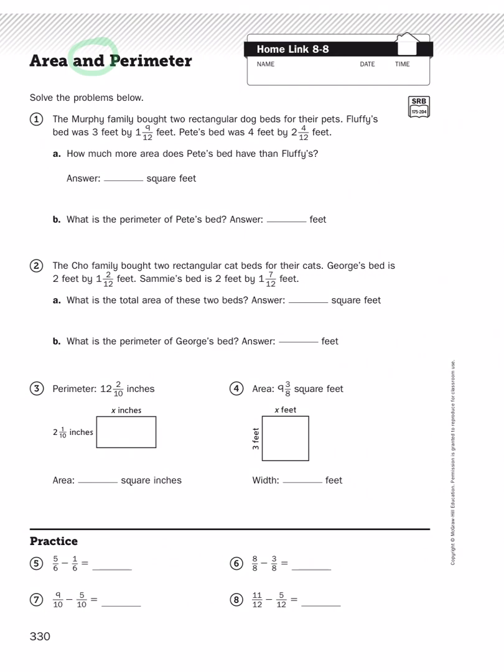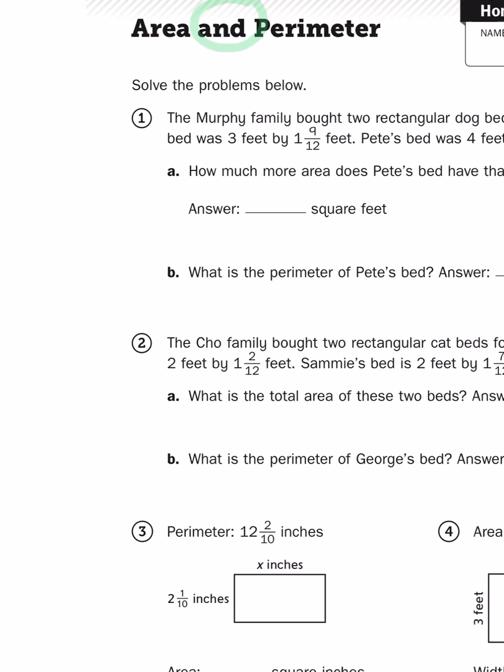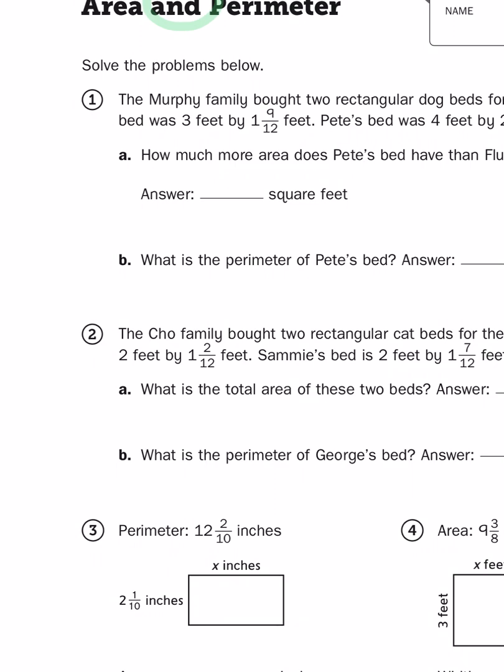Let's take a look at problem number one. It says, the Murphy family bought two rectangular dog beds for their pets. Fluffy's bed was 3 feet by 1 and 9 twelfths feet. Pete's bed was 4 feet by 2 and 4 twelfths feet. How much more area does Pete's bed have than Fluffy's? Of course, when I'm dealing with a story problem, I want to utilize the strategy of RUCKUS.